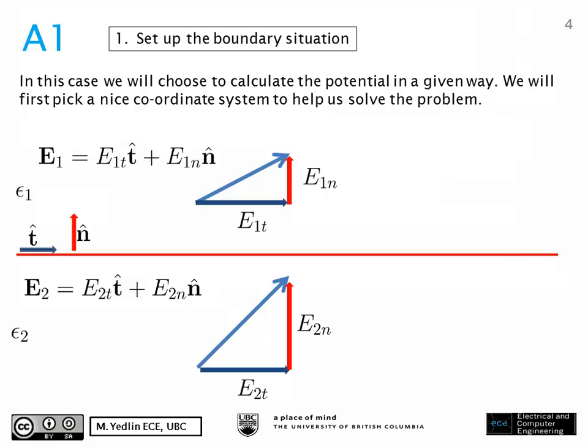In this slide, we see that we have an interface indicated by the red line. We have epsilon 1, the material in the first part of the object we're studying, and we also have epsilon 2 in the bottom right. This red line separates the two materials. We have an electric field separated into two components — one that's tangential and one that's normal — and similarly E2 in the bottom part, also separated into tangential and normal components. Our goal is to study the behavior of the electric field components as we cross the boundary.